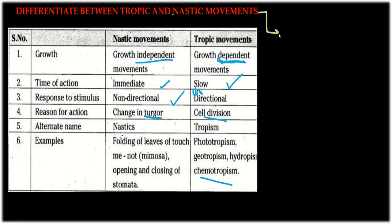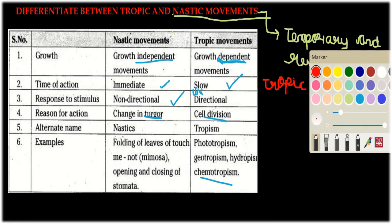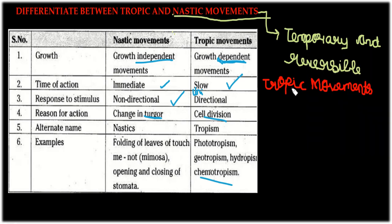Nastic movement is temporary and reversible. Tropic movement, on the other hand, is irreversible.